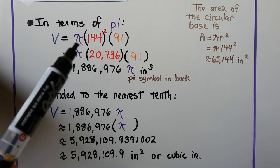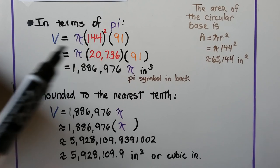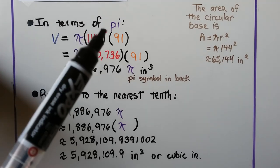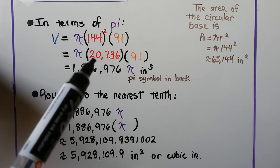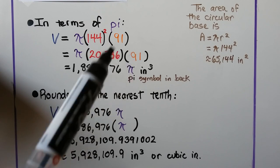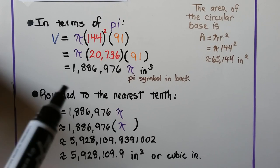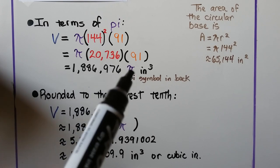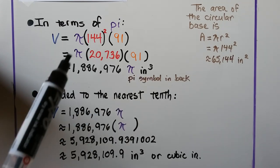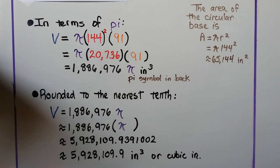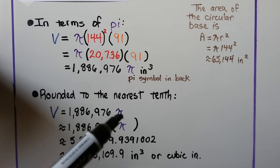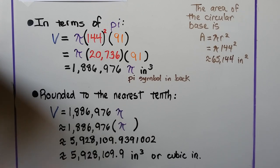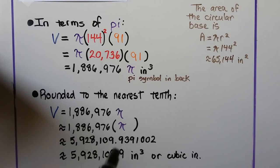The diameter of the base is 288, so the radius is 144. Using the formula V equals pi r squared times height, we do 144 times 144 to get 20,736. Multiplying by the height of 91, in terms of pi we get 1,886,976π cubic inches. If we want the answer rounded to the nearest tenth, we multiply by pi on the calculator and get approximately 5,928,109.9 cubic inches.